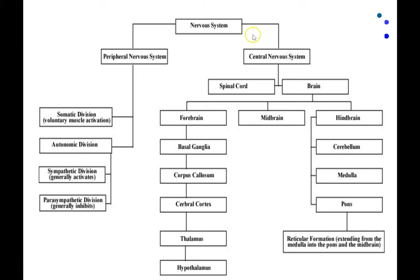To review: the nervous system is broken up into two main parts — the peripheral and the central nervous system. The peripheral nervous system is divided into the somatic division, involving conscious perception of touch and other sensations and voluntary control of movements, and the autonomic division — the automatic division — controlling things like heart rate and digestion outside voluntary control. The autonomic division is further divided into the sympathetic division (fight or flight) and the parasympathetic division (rest and digest), which typically both innervate almost all autonomic targets but push their activity in different directions.